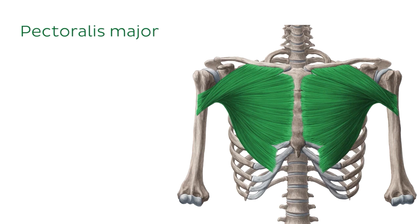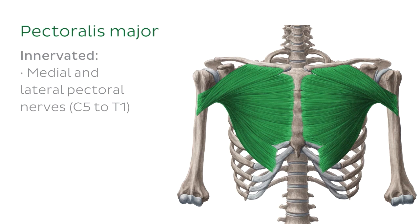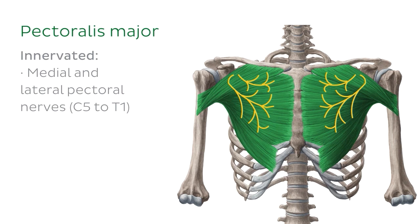The muscle is innervated by the medial and lateral pectoral nerves, C5 to T1, which are direct branches of the brachial plexus. You can see these nerves in yellow on our right — the superior one being the medial pectoral nerve, and the lower one being the lateral pectoral nerve.